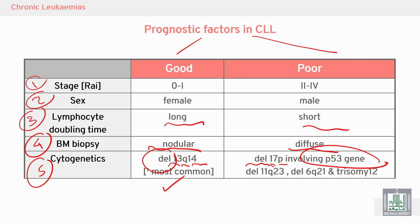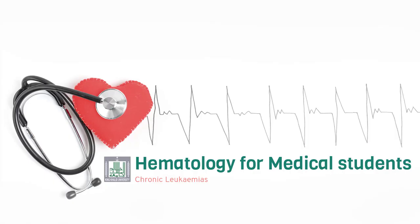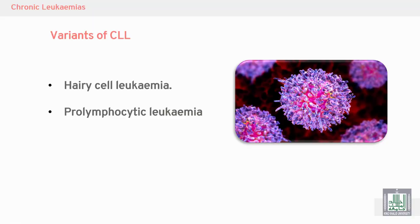Deletion of 17p has poor prognosis because p53 is a tumor suppressor gene. Deletion of that tumor suppressor gene leads to uncontrolled proliferation of malignant cells. There are also variants or different forms of chronic lymphocytic leukemia.